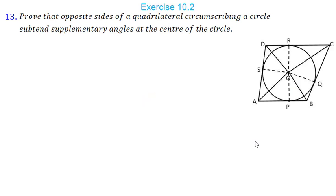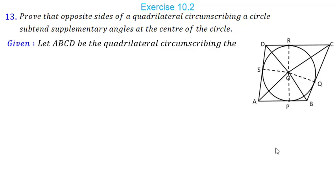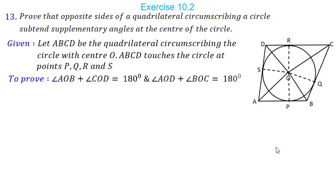Let us move to our last question. Prove that opposite sides of a quadrilateral circumscribing a circle subtend supplementary angles at the center of the circle. This means angle AOB + angle COD = 180°, and similarly angle BOC + angle AOD = 180°. We write: let ABCD be the quadrilateral circumscribing the circle with center O. ABCD touches the circle at points P, Q, R, S. We have to prove that angle AOB + angle COD = 180° and angle BOC + angle AOD = 180°.